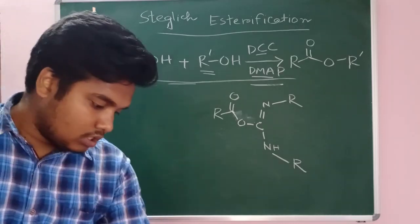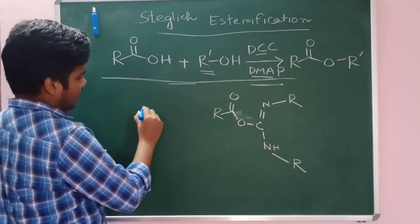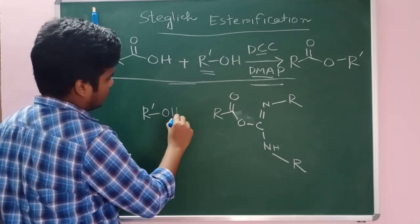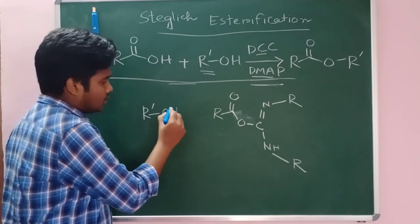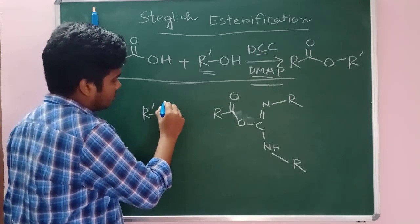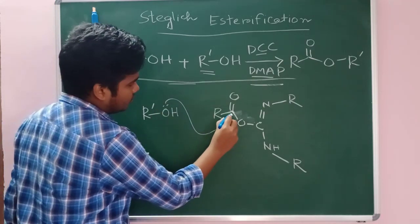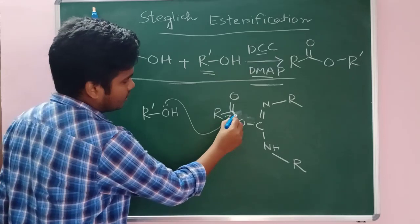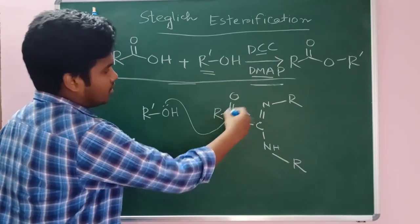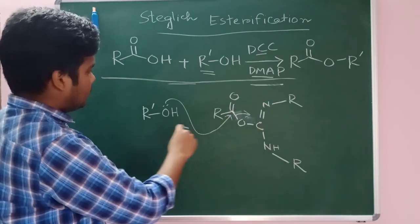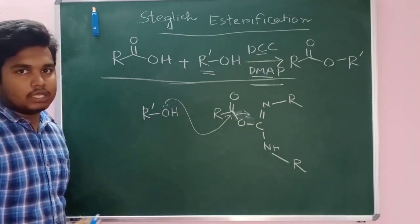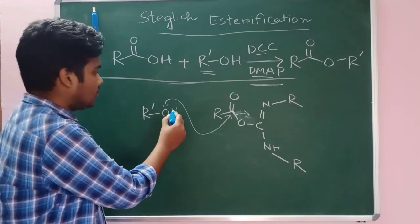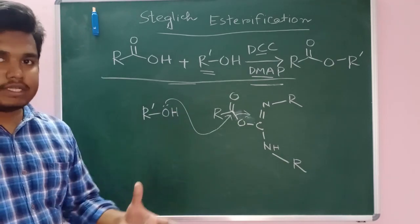Now if simply we have alcohol, that time this alcohol will add to this carbonilic delta. And this whole part will go out. And we will get, after proton will be cleared, after leaving a proton, we can get our ester.